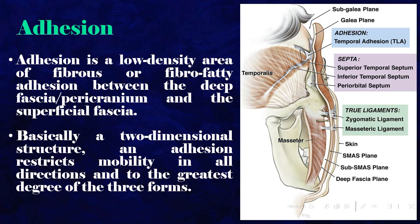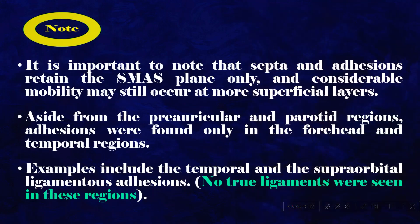An adhesion is a low-density area of fibrous or fibrofatty adhesion between the deep fascia/pericranium and the superficial fascia. Basically a two-dimensional structure, an adhesion restricts mobility in all directions to the greatest degree of the three forms. It is important to note that septa and adhesions retain the SMAS plane only, and considerable mobility may still occur at more superficial layers. Aside from the preauricular and parotid regions, adhesions were found only in the forehead and temporal regions. Examples include the temporal and the supraorbital ligamentous adhesions. No true ligaments were seen in these regions.